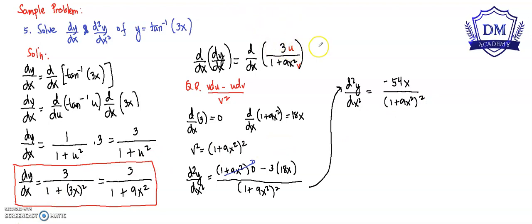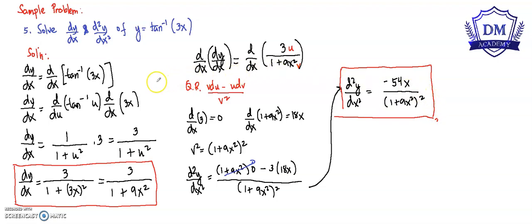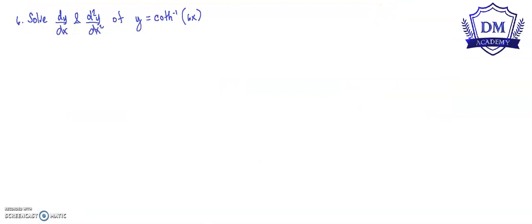So the first term becomes 0, and negative 3 multiplied by 18x is negative 54x, all over the quantity of 1 plus 9x squared, squared. This is the second derivative of the function. Next, let us solve the higher derivatives of the inverse hyperbolic function — specifically the first and second derivative of inverse hyperbolic tangent of 6x.